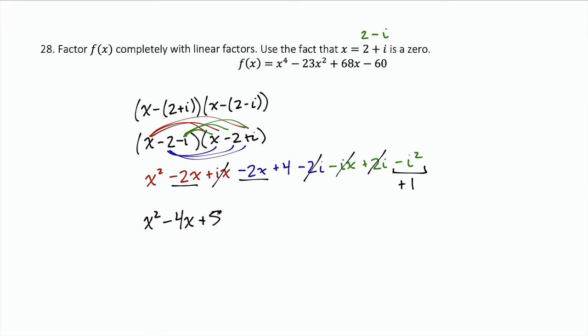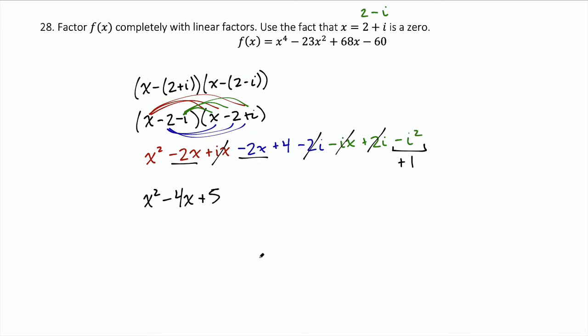So this tells us that x squared minus 4x plus 5 is a factor of this polynomial. To find the remaining factor, we can take our polynomial and do a long division. So we've got x to the fourth minus 23x squared plus 68x minus 60. Notice that I left a space because there's no x cubed term. And we divide by the x squared minus 4x plus 5.